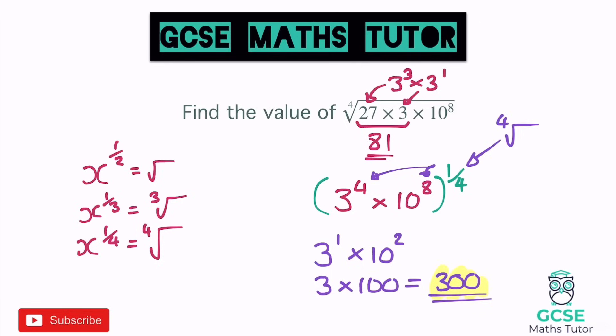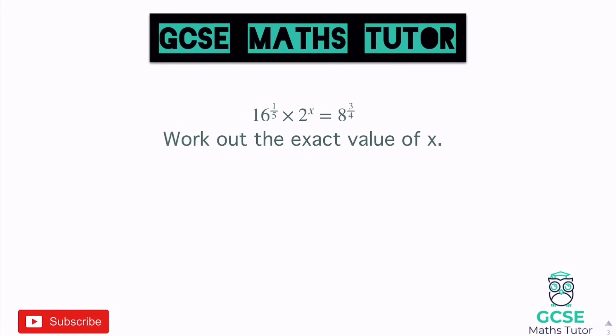On to question three: 16 to the power of a fifth times 2 to the power of x equals 8 to the power of three-quarters. Work out the exact value of x. When multiplying with powers, you can only add the powers when the base numbers are the same. On the left we have base 2 and base 16, but 16 can be written as a power of 2.